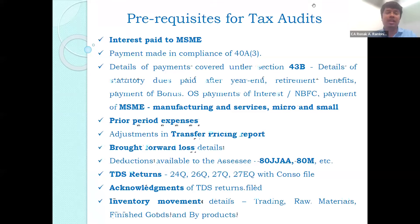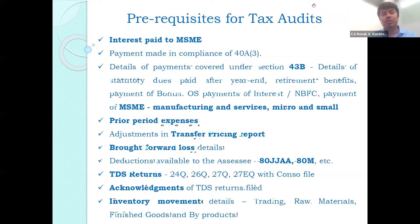Based on the tax regime selected, one has to mention which deductions are available. In the case of the new regime for corporates, there are a limited number of deductions available. The details of the deduction amounts are to be mentioned, as this is one of the validation points where the income tax department validates the deduction claimed in the ITR against what the tax auditor has allowed in the tax audit report.